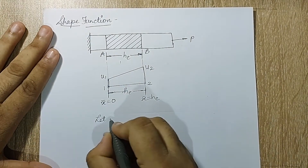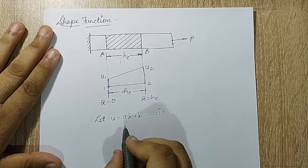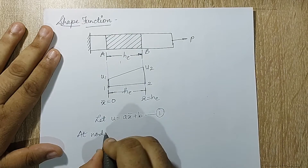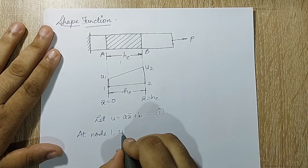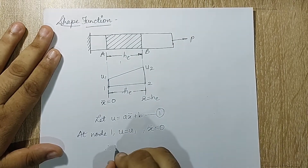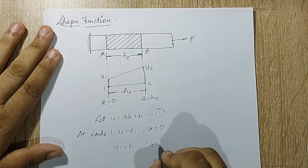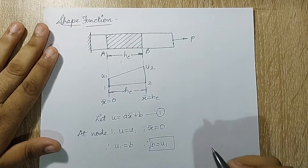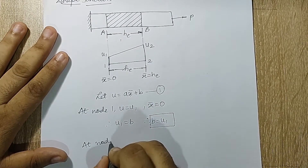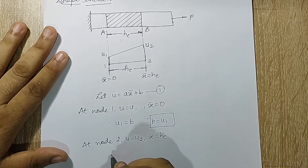For the displacement, I assume the equation u = a·x̄ + b. I need to find the values of a and b. At node 1, u = u1 and x̄ = 0, so substituting gives u1 = b, therefore b = u1. At node 2, u = u2 and x̄ = h_e.